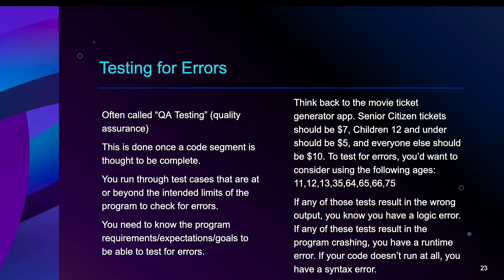Ways we can test for errors. This is referred to in the industry as QA testing for quality assurance. Once you feel like you have a chunk of code that's ready to test, you can use the console log or your user interface. At that point, you can run through what we call test cases that are at or beyond the intended limits. In order to test for errors, you do have to know what the program requirements or expectations are to be able to test for those errors.